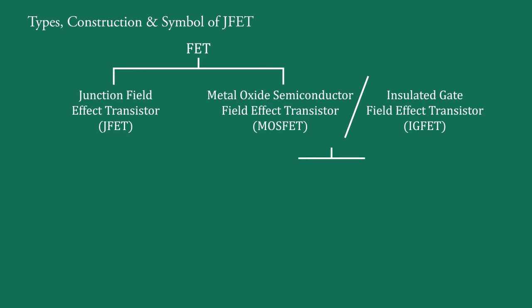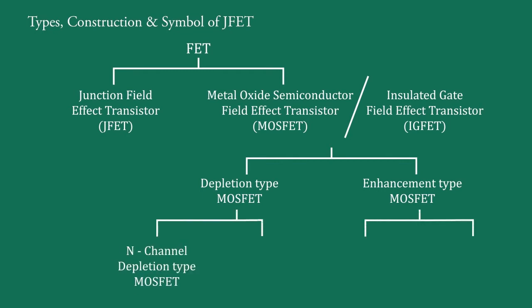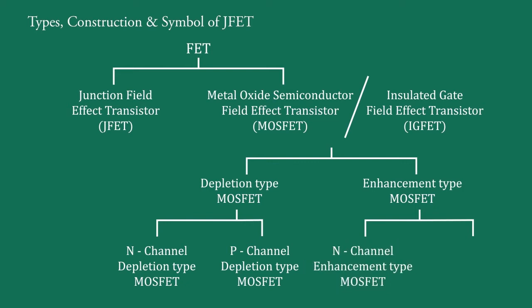MOSFET is of two types: Depletion Type MOSFET and Enhancement Type MOSFET. These two MOSFETs are also of two kinds each: N Channel Depletion Type MOSFET and P Channel Depletion Type MOSFET. Similarly, N Channel Enhancement Type MOSFET and P Channel Enhancement Type MOSFET.